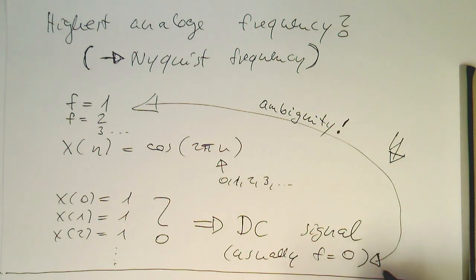And so therefore in order to avoid ambiguity, we need to stay below this 0.5 rule. So now after we have looked at the ambiguity in the sample domain, we can also go back now into the analog domain and see what this means for the analog domain.